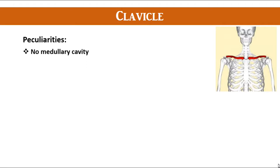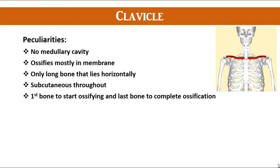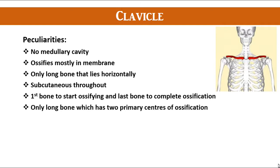Clavicle does not have any medullary cavity — it is devoid of medullary cavity. It ossifies mostly in the membrane. It is the only long bone that lies horizontally, and it is subcutaneous throughout. It is the first bone to start ossifying and the last bone to complete ossification. It is the only long bone which has two primary centers of ossification.